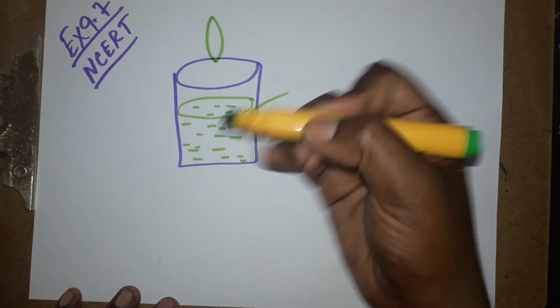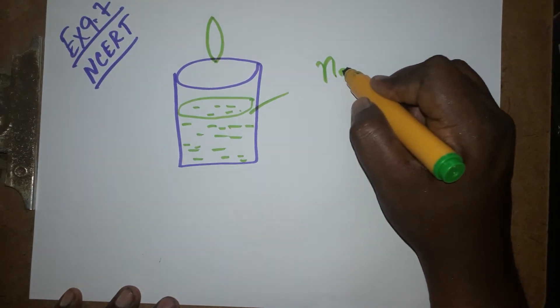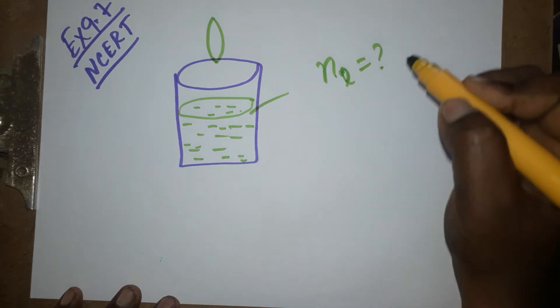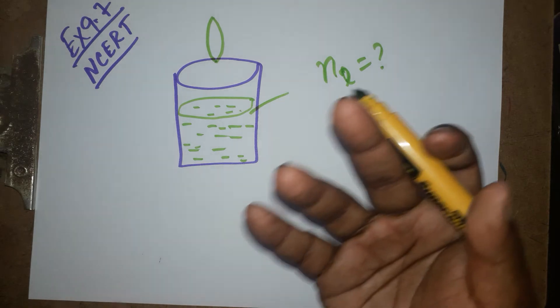They are asking what is the refractive index of the liquid. When we drop the glass inside the liquid, the lens is going to get disappeared.